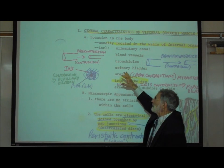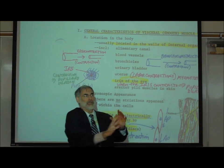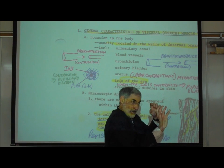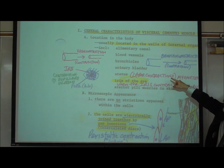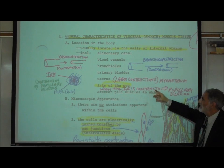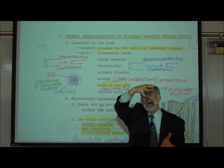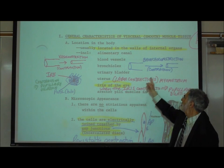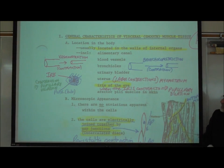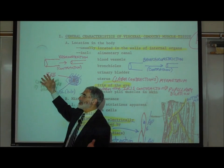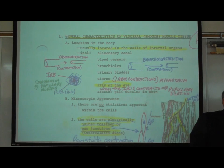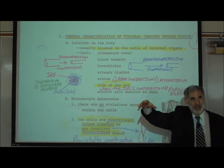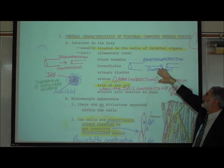Not only is there visceral smooth muscle in the wall of blood vessels allowing dilation or constriction, there is also visceral smooth muscle in the walls of our airways, our bronchioles. Our airways can be dilated or they can narrow and become constricted. When blood vessels dilate or constrict, that's called vasodilation or vasoconstriction. When airways — bronchioles — dilate or constrict, that's called bronchodilation and bronchoconstriction.